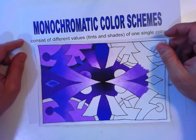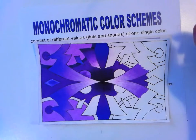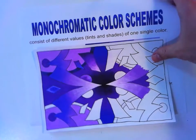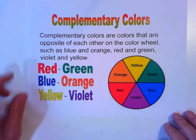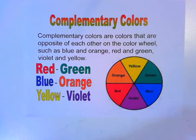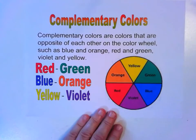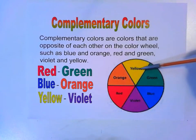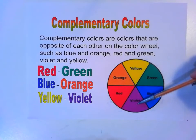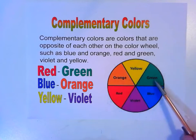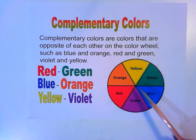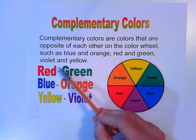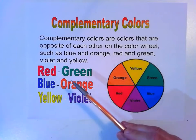This whole abstract design is going to be one color scheme — only monochromatic, so these two go together. The next thing I want to show you is complementary colors. Complementary colors are colors that are opposite each other on the color wheel: yellow and purple, red and green, orange and blue — these are all complementary colors.